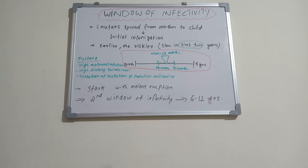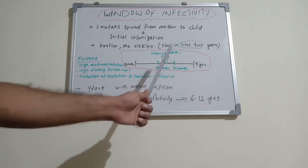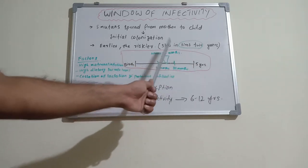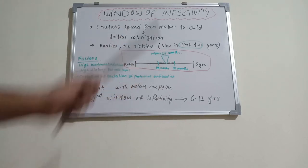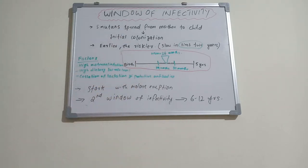So colonization is associated with formation of dental caries. Window of infectivity is nothing but the initial colonization of Streptococcus mutans in a child's mouth, happening between 19 months to 31st month. If you put this in a graph format, birth to 5 years during this period, the mean value we can say is 26 months, exactly 2 years and 2 months. During that period, the initial colonization happens.